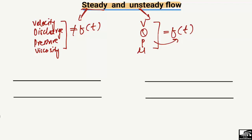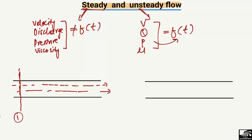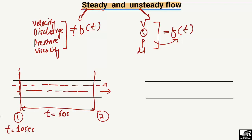To differentiate between these two types of flow, consider two different pipes. In the first pipe, fluid is moving in one direction. We observe two points: point one and point two. At time T = 10 seconds, we measure properties at one location, and after a time difference of one minute (60 seconds), at T = 70 seconds, we measure again.